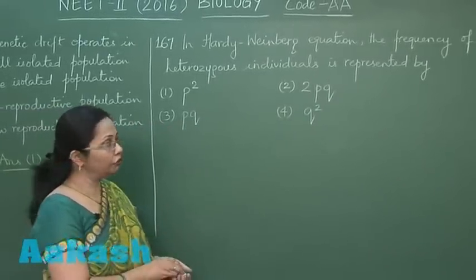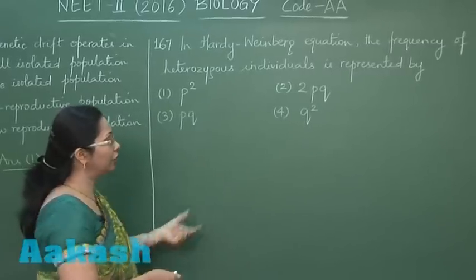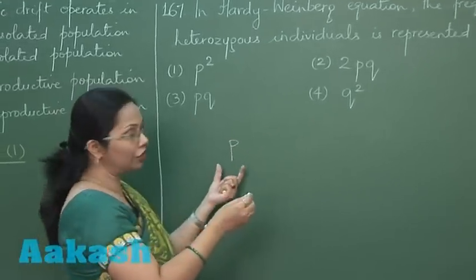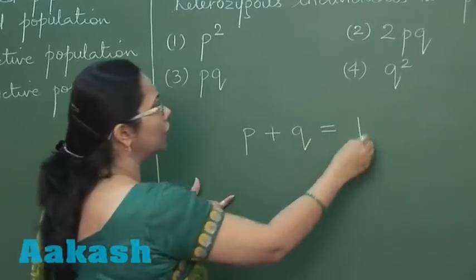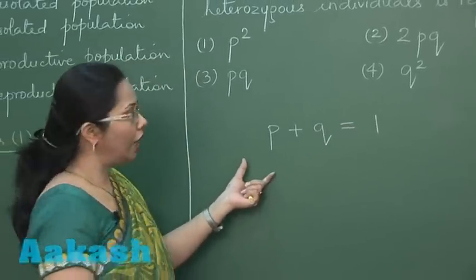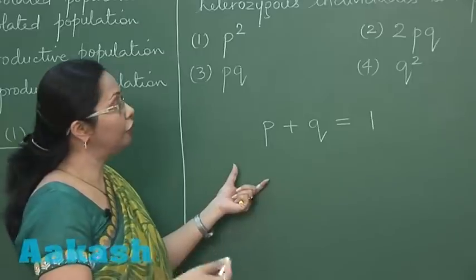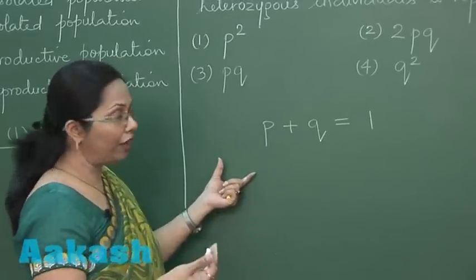Now in Hardy-Weinberg equation, the frequency of heterozygous individuals... According to Hardy-Weinberg equation, the alleles in a population—one is a dominant allele and the other is a recessive allele—their sum total is always taken as one. If we take the equation for the genotypes, we know that the genotypes are in pairs, the alleles are in pairs in the genotype.